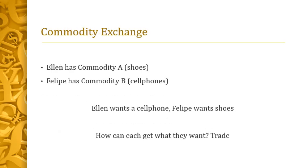Let's look at a very simplified version of the marketplace. Ellen has commodity A — shoes that she has made. Felipe has commodity B — cell phones that he's made. Ellen wants a cell phone; Felipe wants shoes. Apart from robbery, the way we get different commodities is through the process of trade, through exchange.